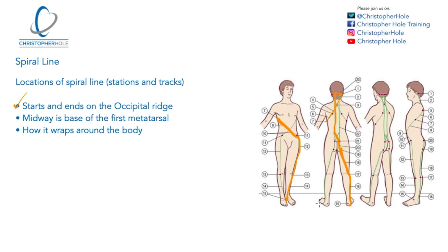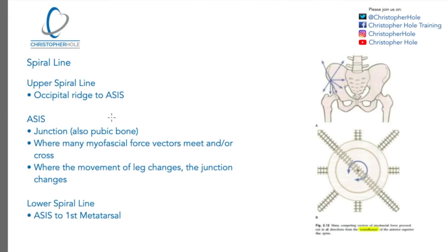Essentially it's wrapping itself around the body. If I put it on the other side you can see it comes down the side, across, down the leg, wraps onto the inside of the foot, comes up the outside, across the hamstring, up the pelvis, across the back and then up the erector spinae into point 23 again. So that is the overview of what the anatomy looks like — you can see the midway point is the base of the first metatarsal and how it wraps around the body.